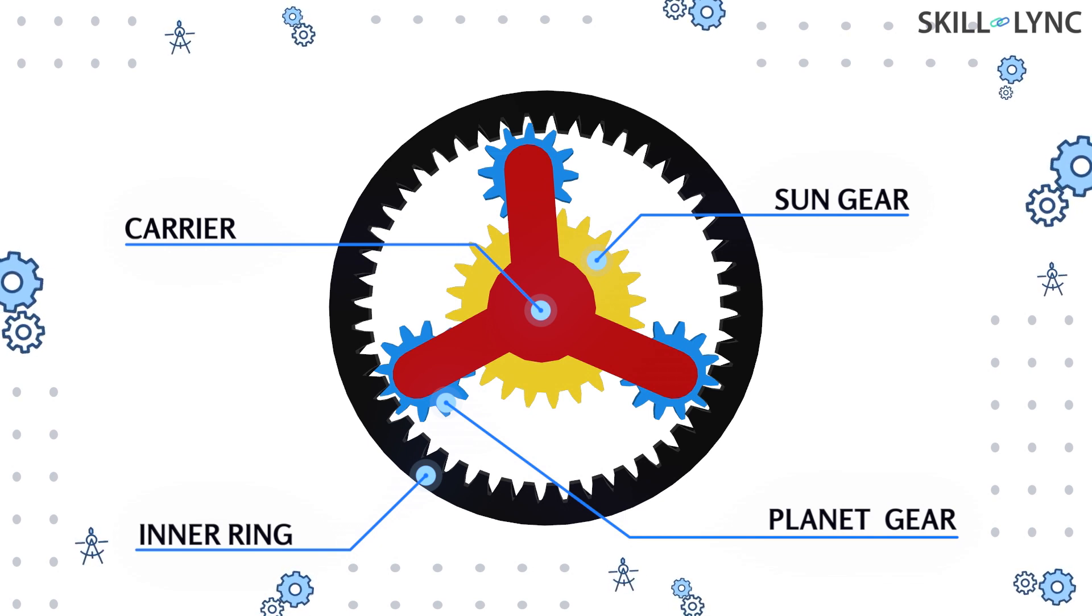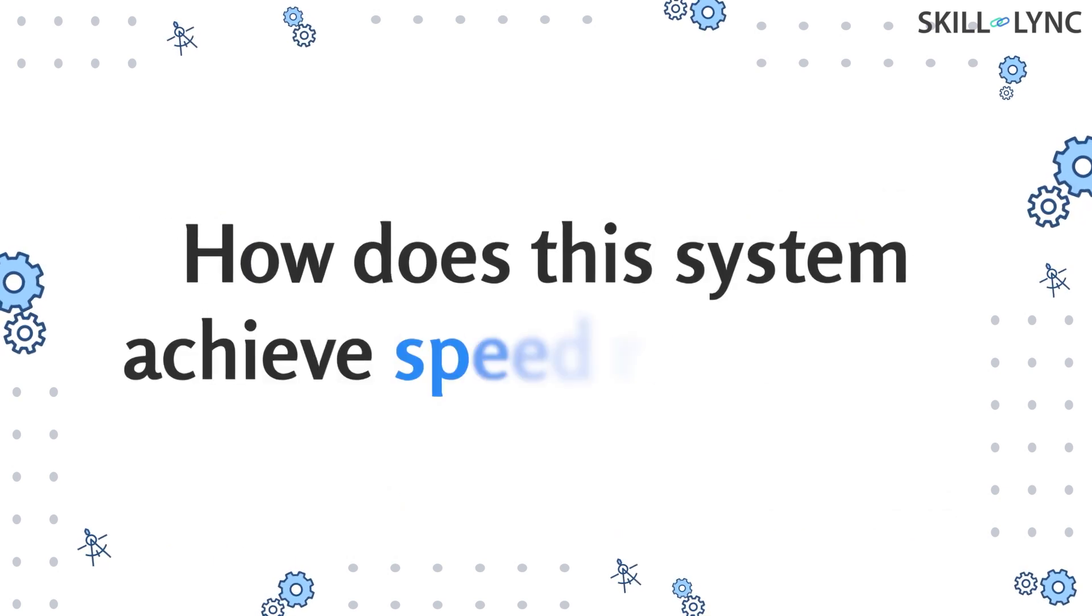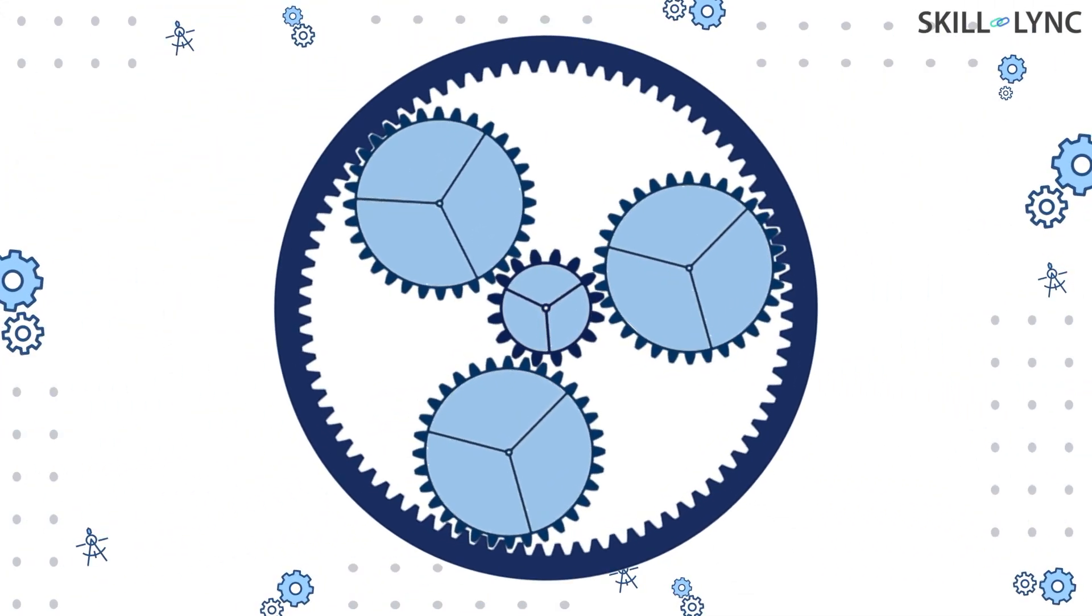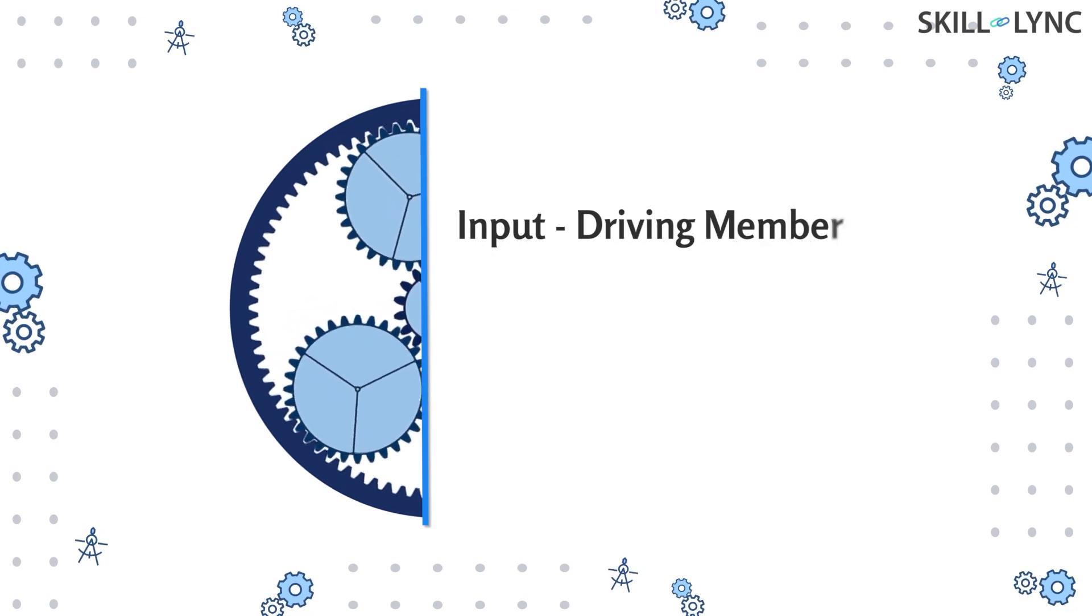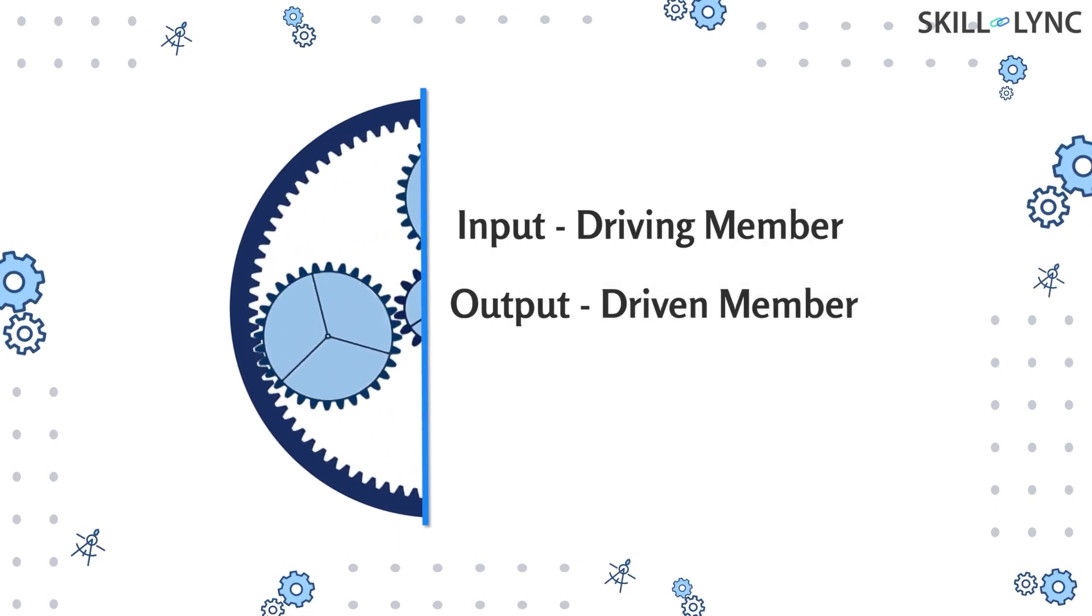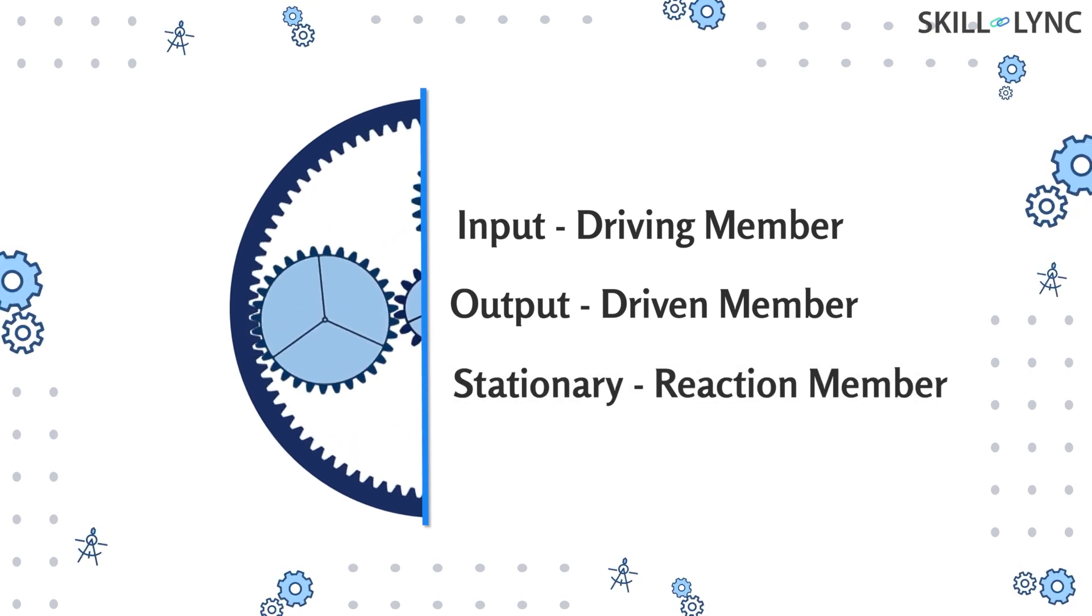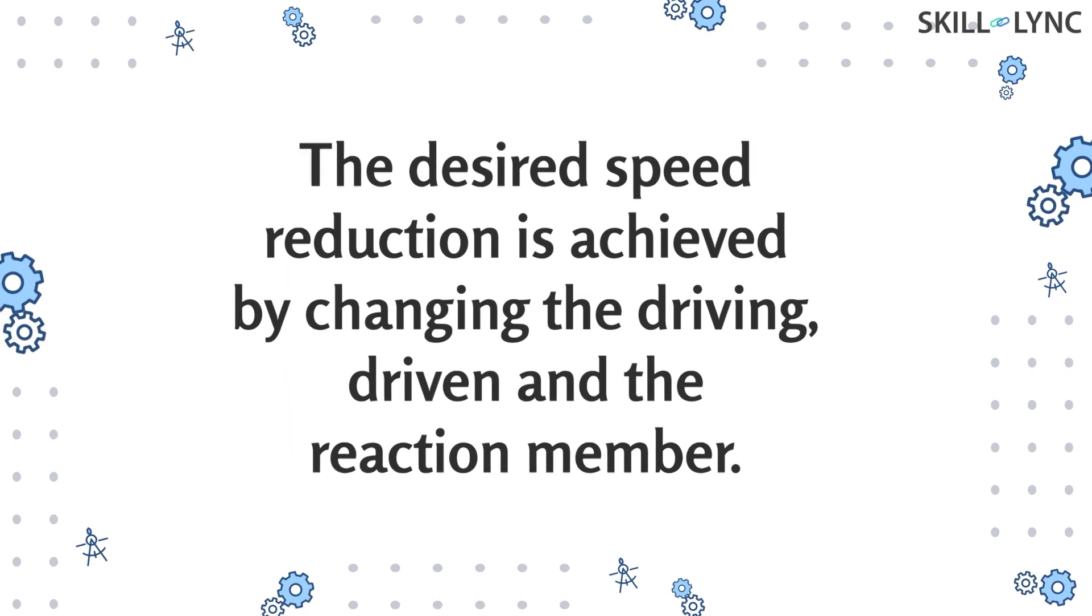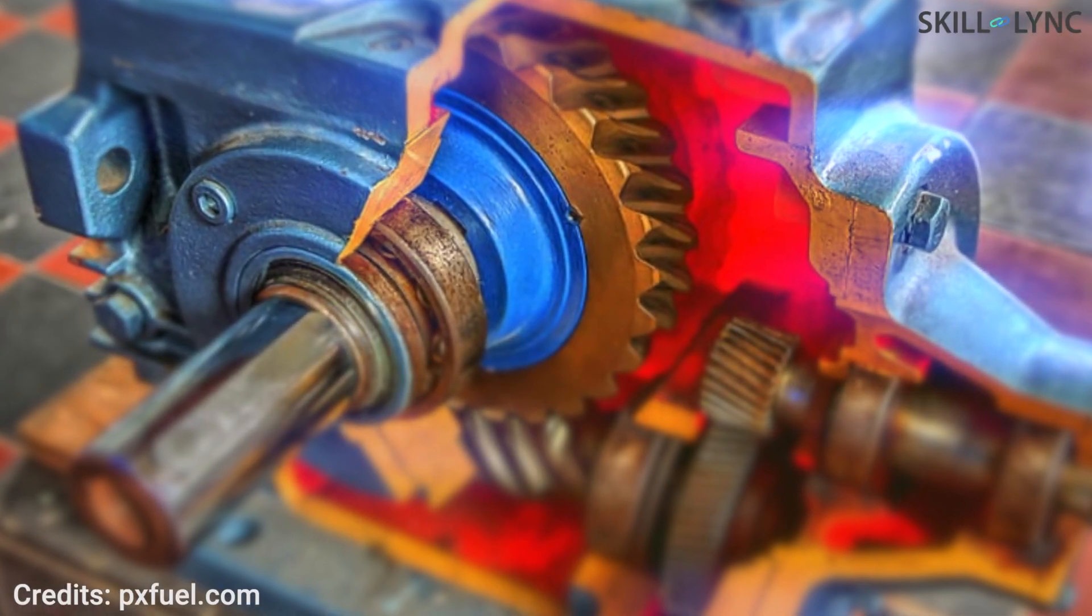This is the simple layout of an ordinary planetary gear set, but how does this system achieve speed reduction? The system has three gears but all three are not used to transmit motion. The input motion is given to one gear while another is used to extract the output. The third gear is fixed and stationary. This is the reaction member. The desired speed reduction is achieved by changing the driving, driven, and reaction member.